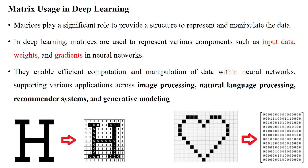Hello everyone. In this session we will discuss the purpose of matrix in ML and deep learning applications. The matrix has a number of rows and columns. The matrix plays a significant role to provide a structure to represent the input data, and we can manipulate the data by using matrix calculations. In deep learning, matrices are used to represent various components such as input data, weights, and gradients in neural networks.